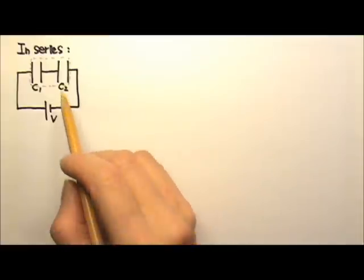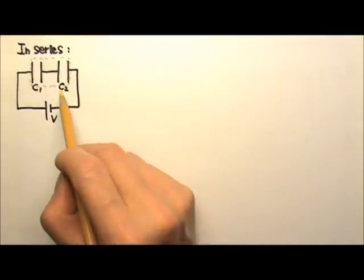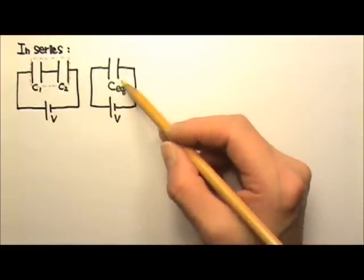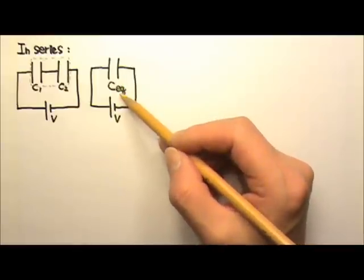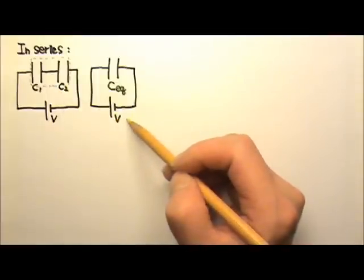What we're going to do now is to find the equivalent capacitance of these two capacitors in series. Suppose we have this other circuit with a single capacitor that has a capacitance that is the equivalent of those two in series, and it is connected to an identical battery V.